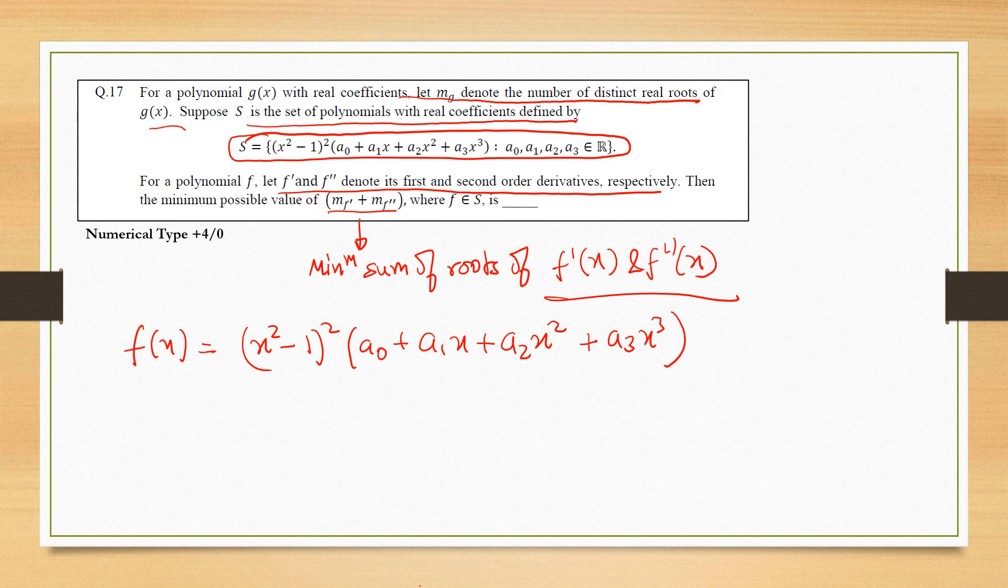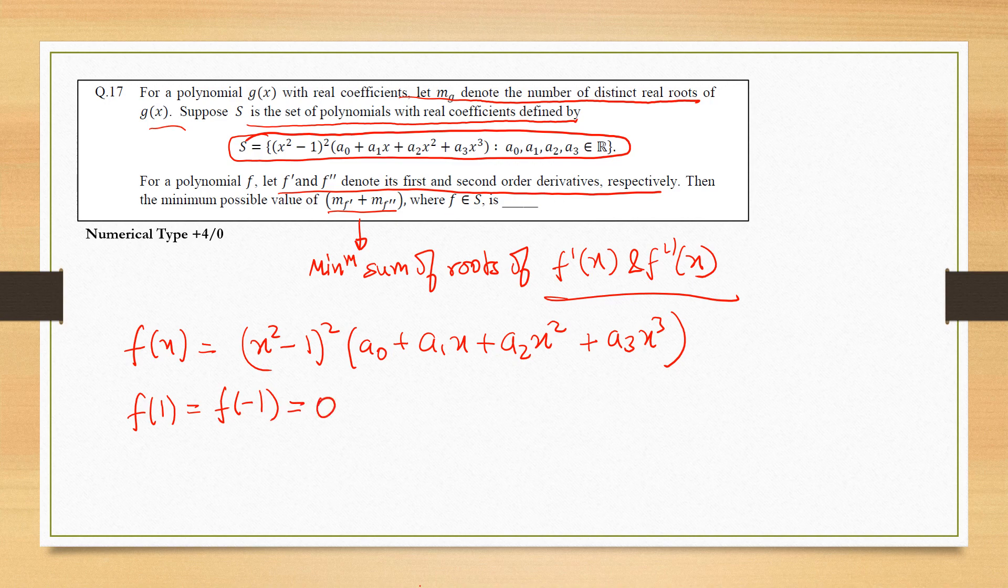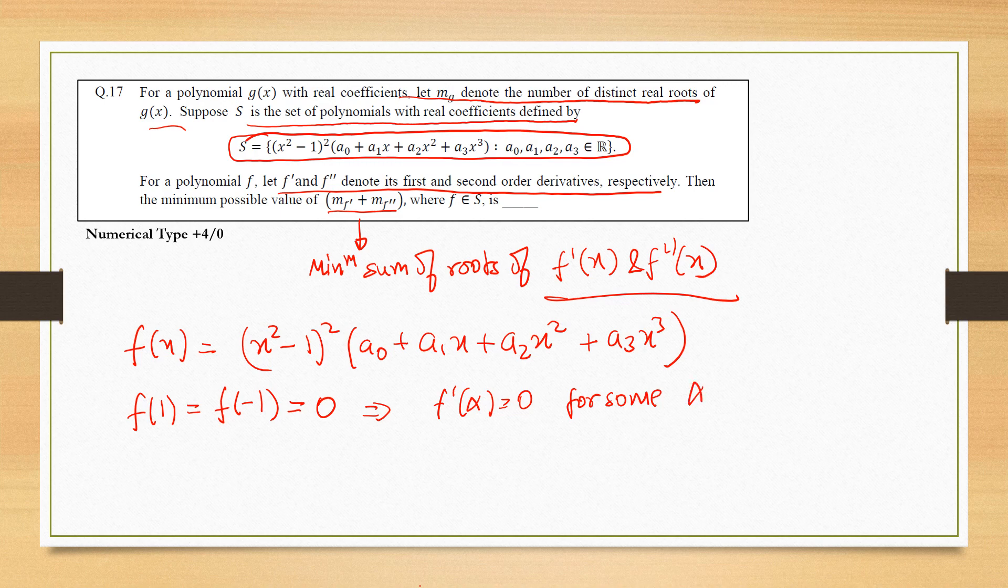We know that f(1) = f(-1) = 0, so by Rolle's theorem, f'(α) = 0 for some α belonging to (-1, 1). This is Rolle's theorem.